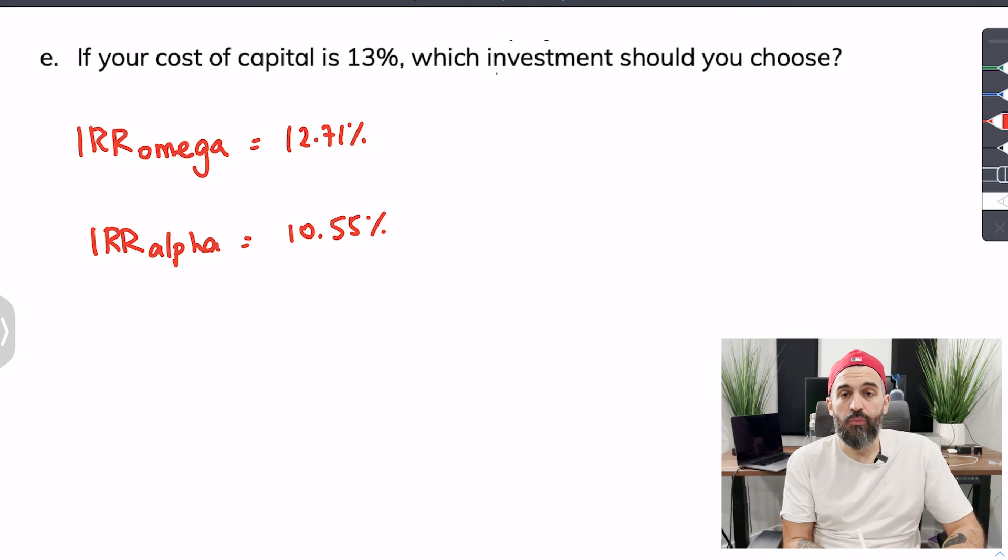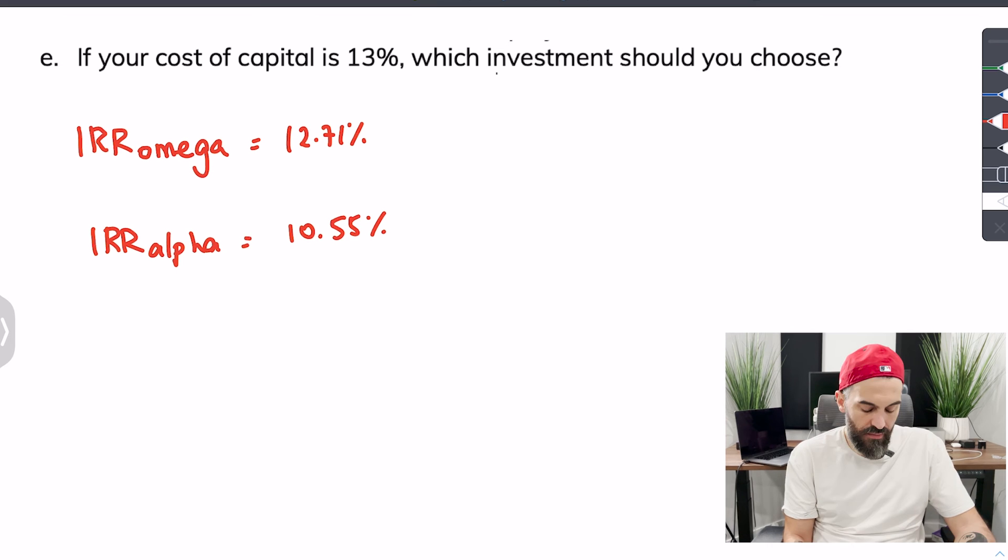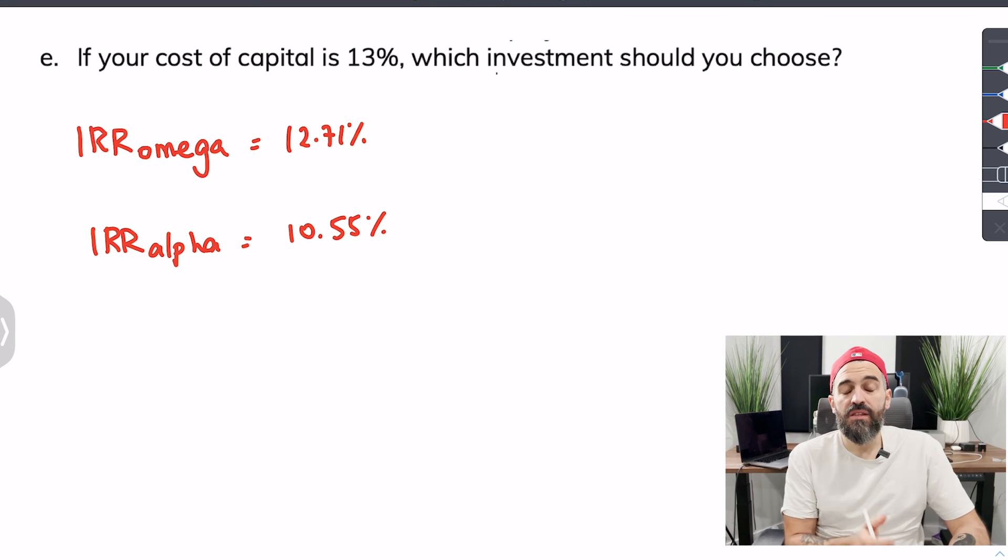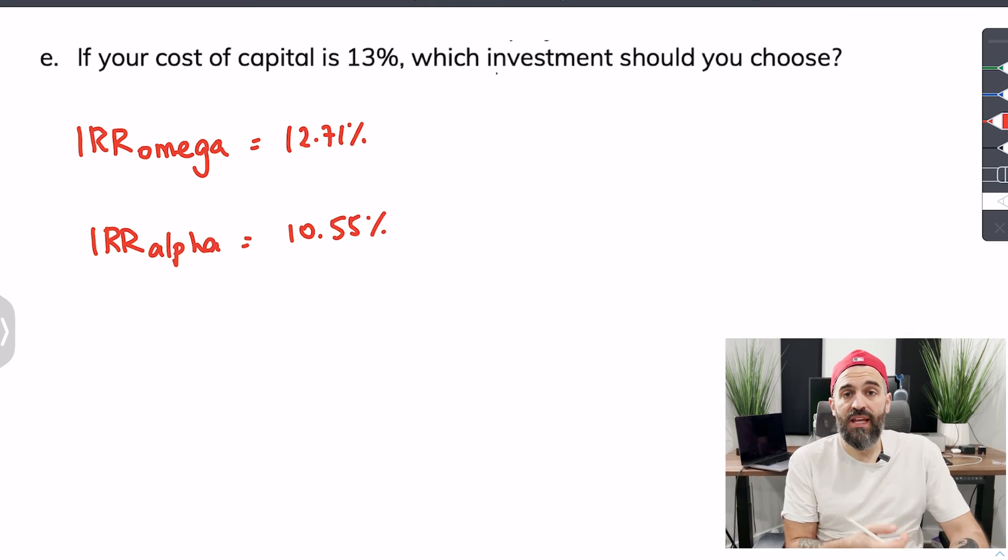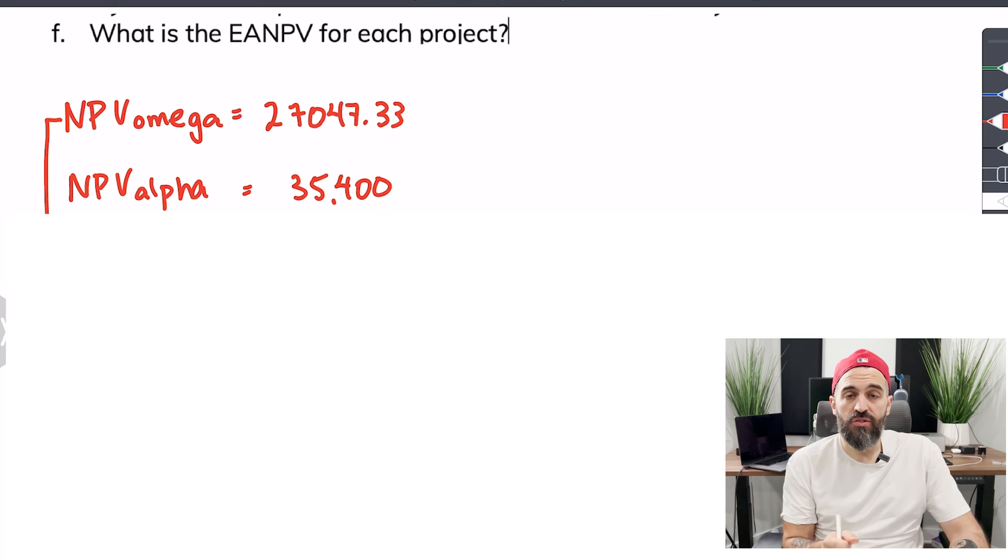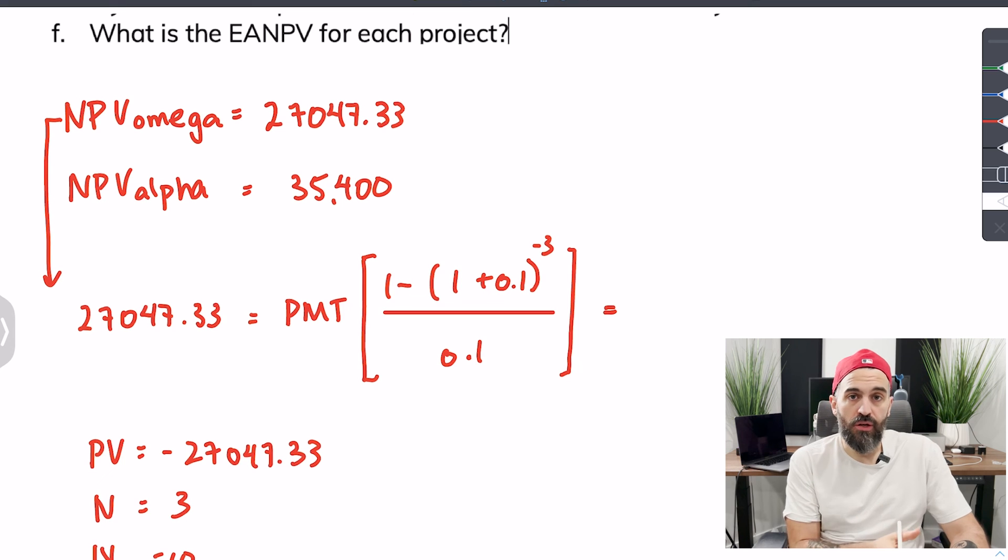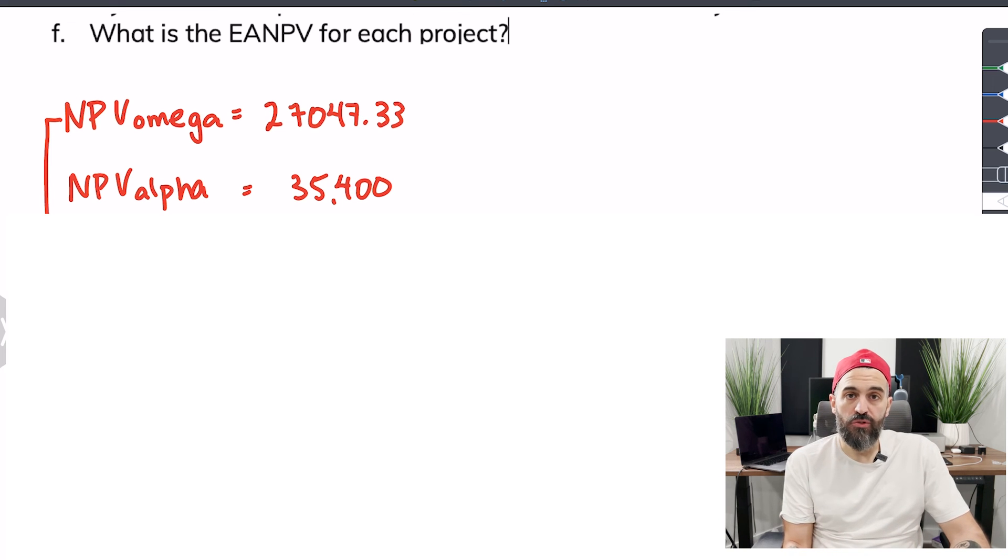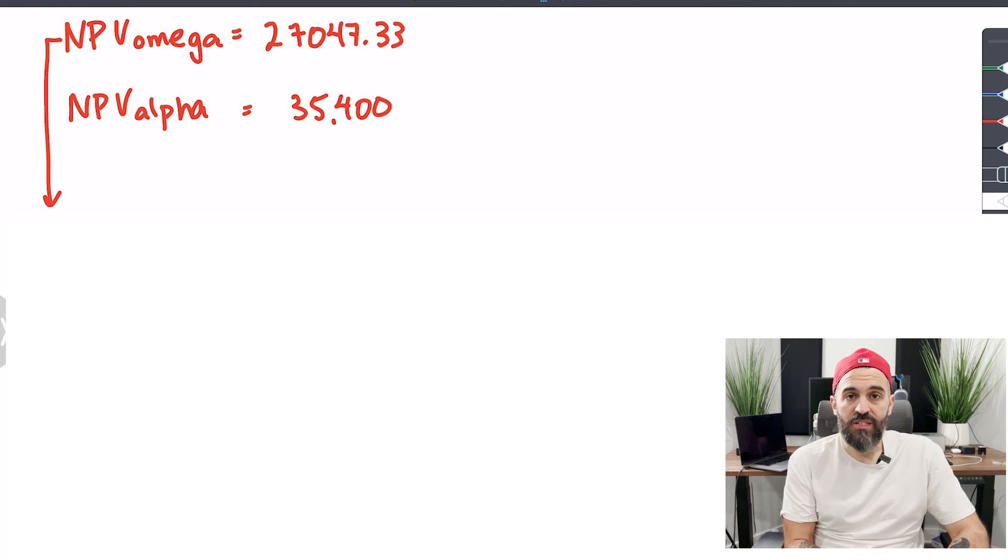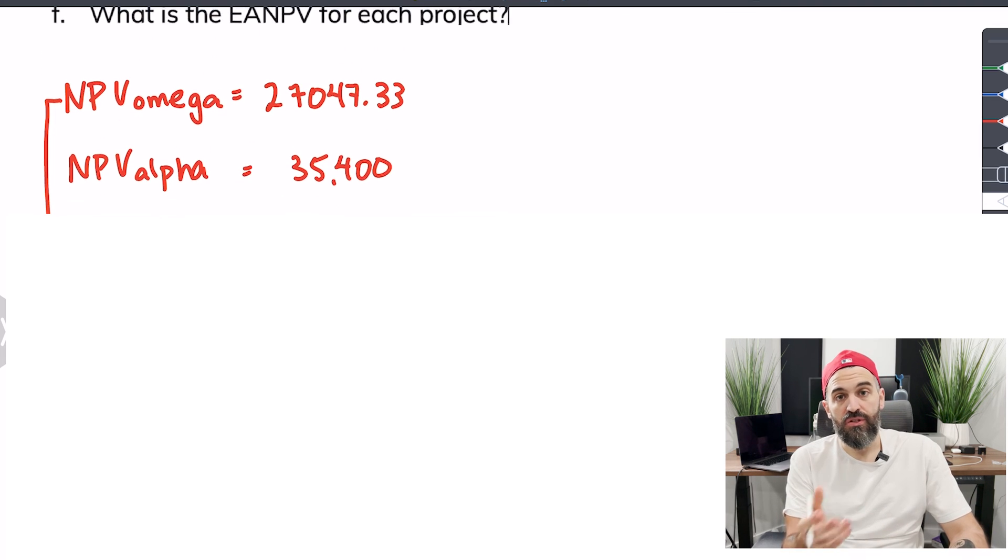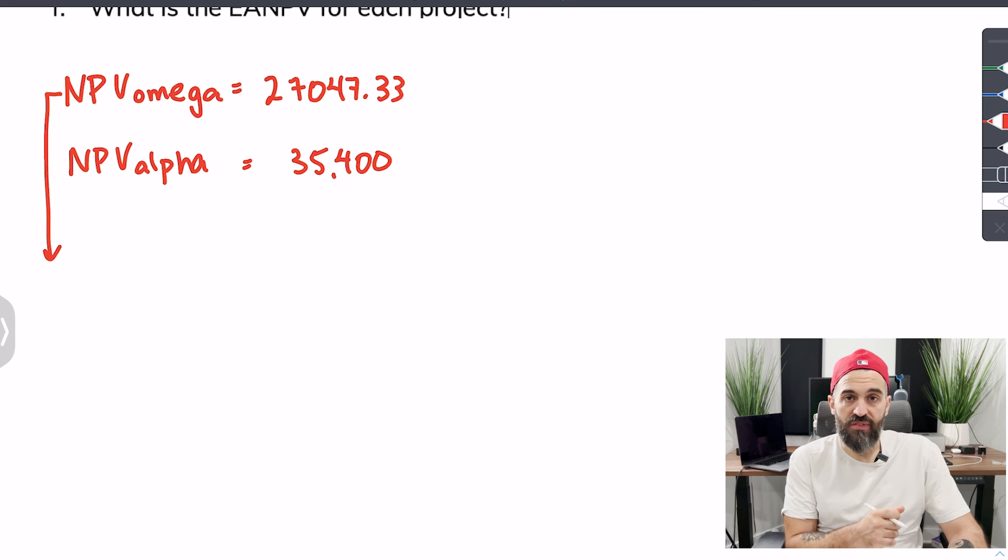In this last question we've asked you to find the equivalent annual NPV for each of these projects. Now this can be done on your financial calculator, it can also be done using formulas so I will show both. First for the Omega project which was this finite three-year investment, we're asking you to convert the net present value into an annuity.